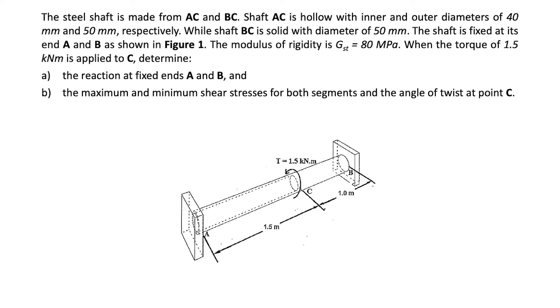When the torque of 1.5 kilonewton meters is applied to C, determine: a) the reaction at fixed ends A and B, and b) the maximum and minimum shear stresses for both segments and the angle of twist at point C. Look at this figure. For indeterminate structure there are two supports at both ends at A and B.